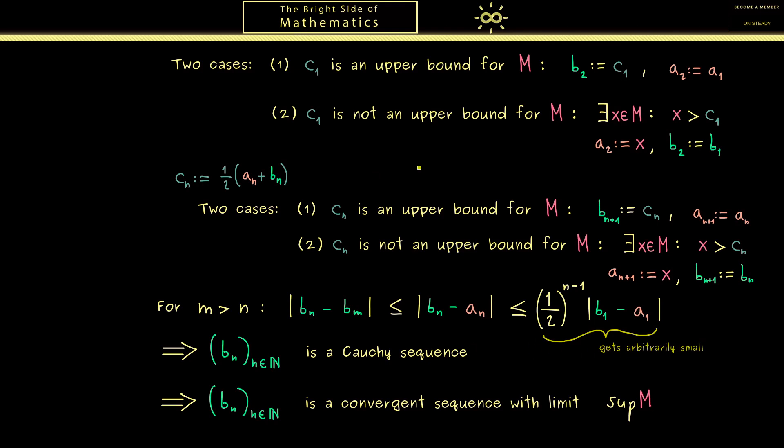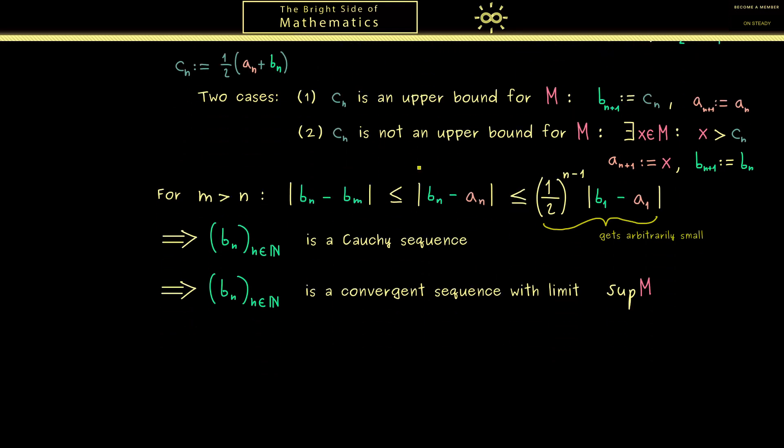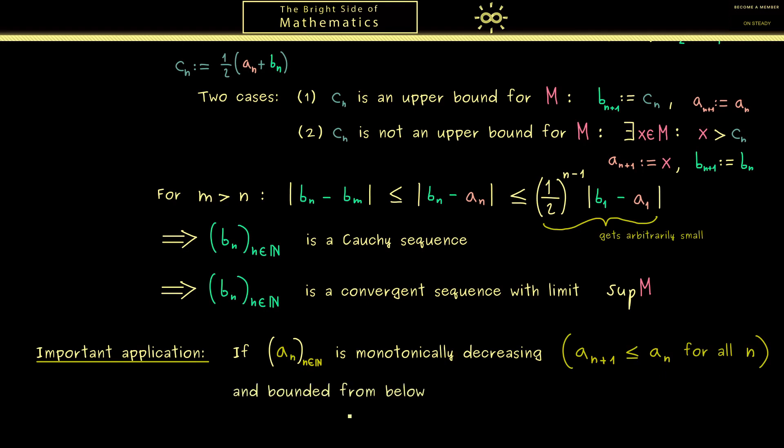However now knowing that the supremum and infimum always exists has an important application. We immediately get a nice criterion to show convergence of a sequence. If the sequence a_n is monotonically decreasing, which simply means that each sequence member is less or equal than the predecessor.